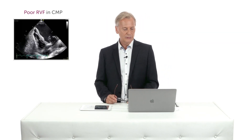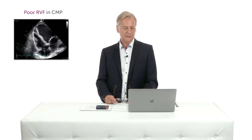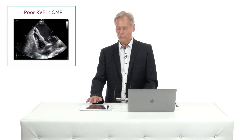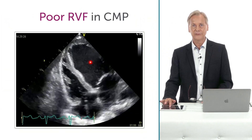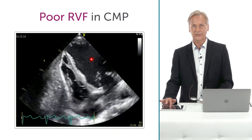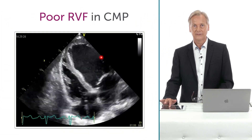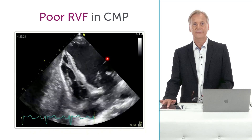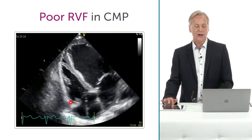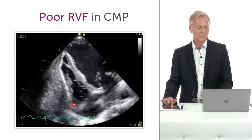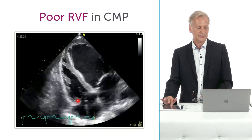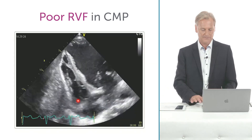Here is a beautiful example of a patient who has biventricular heart failure — very poor left ventricle function, but also very poor right ventricle function, as you can see here.